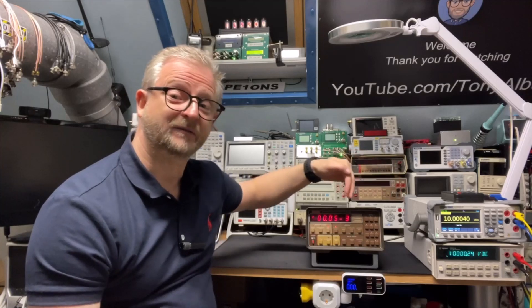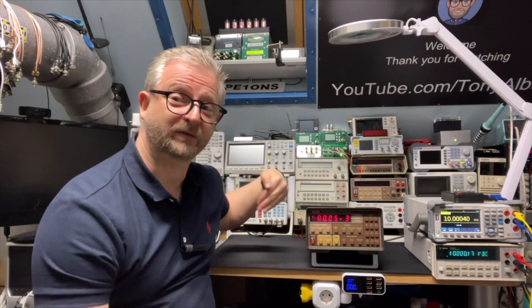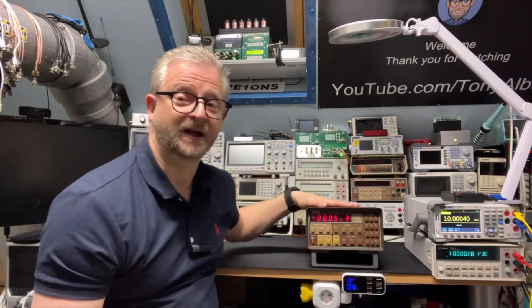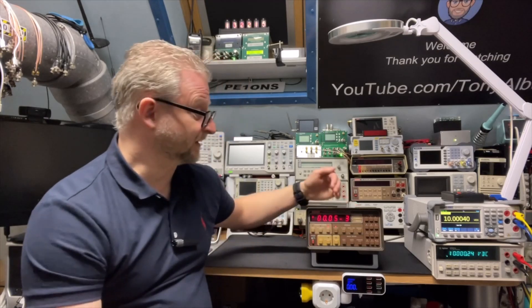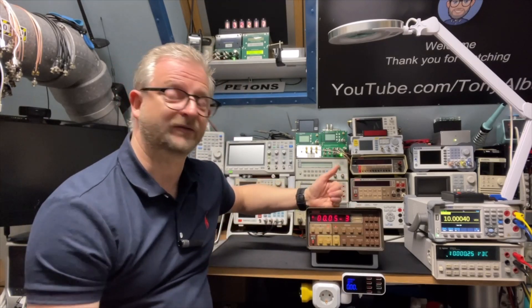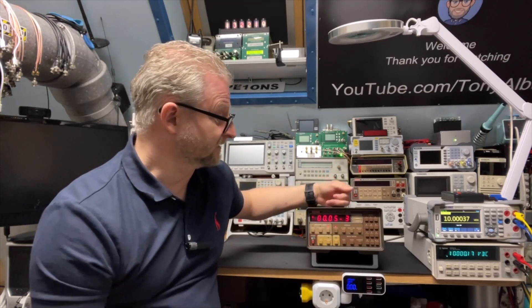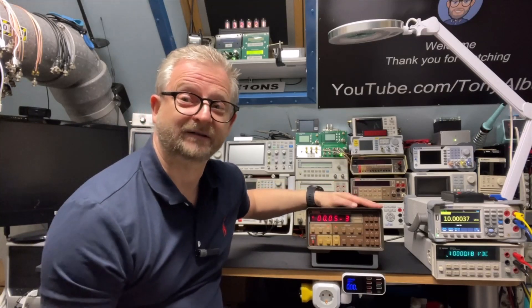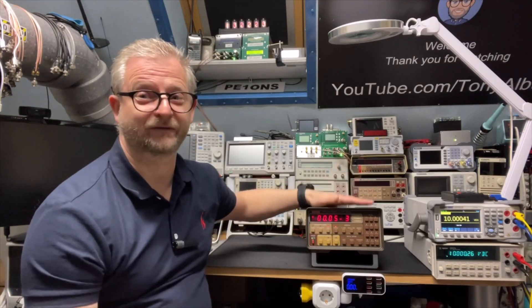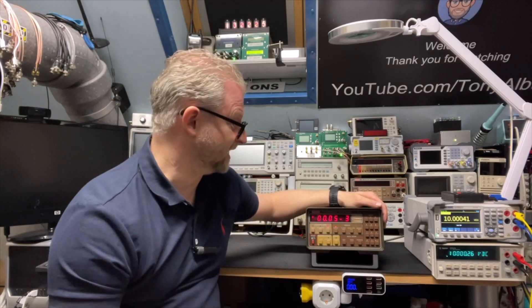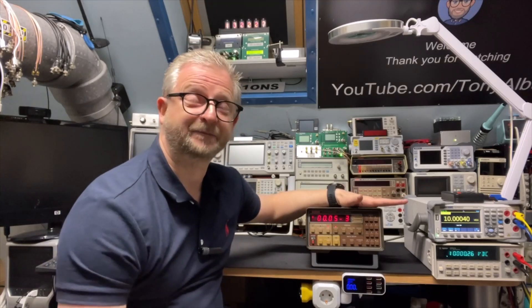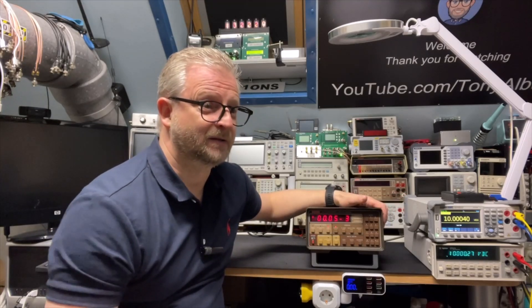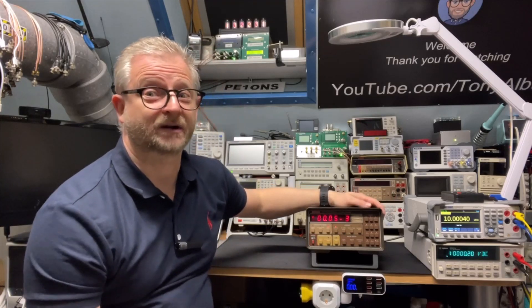But also you have the currents, positive and negative. The positive makes it a current source as well, just like the 220 and the 224. And negative on that side makes it kind of an electronic load, but only for the values that you can program. So that is 2 milliamps, 20 milliamps and 100 milliamps.